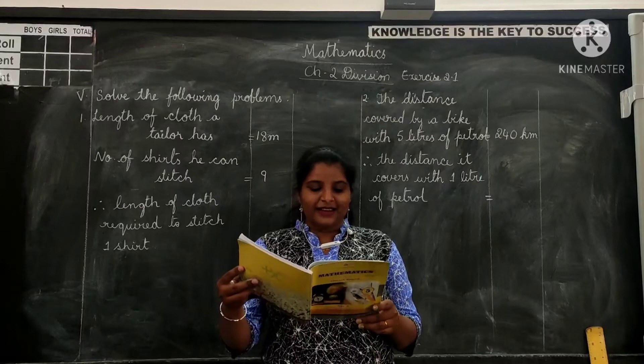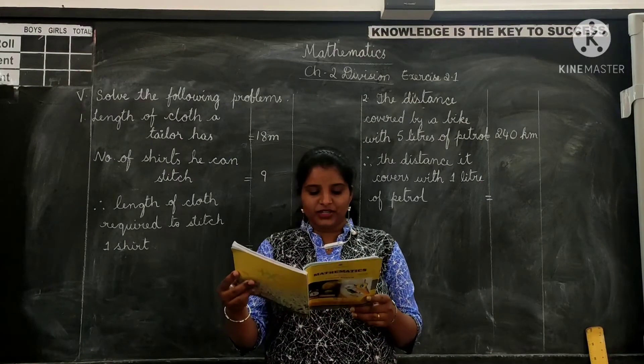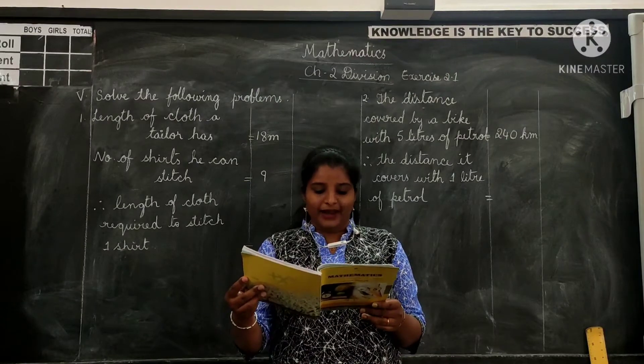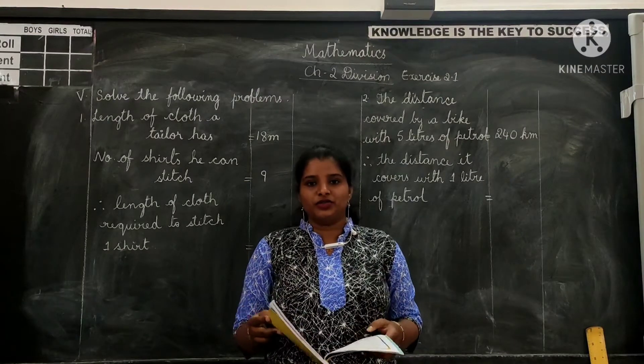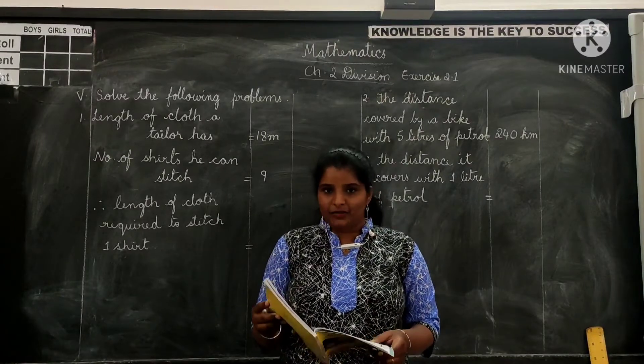First problem: A tailor has 80 meters of cloth. He can stitch 9 shirts from this cloth. Find the length of cloth required to stitch 1 shirt.